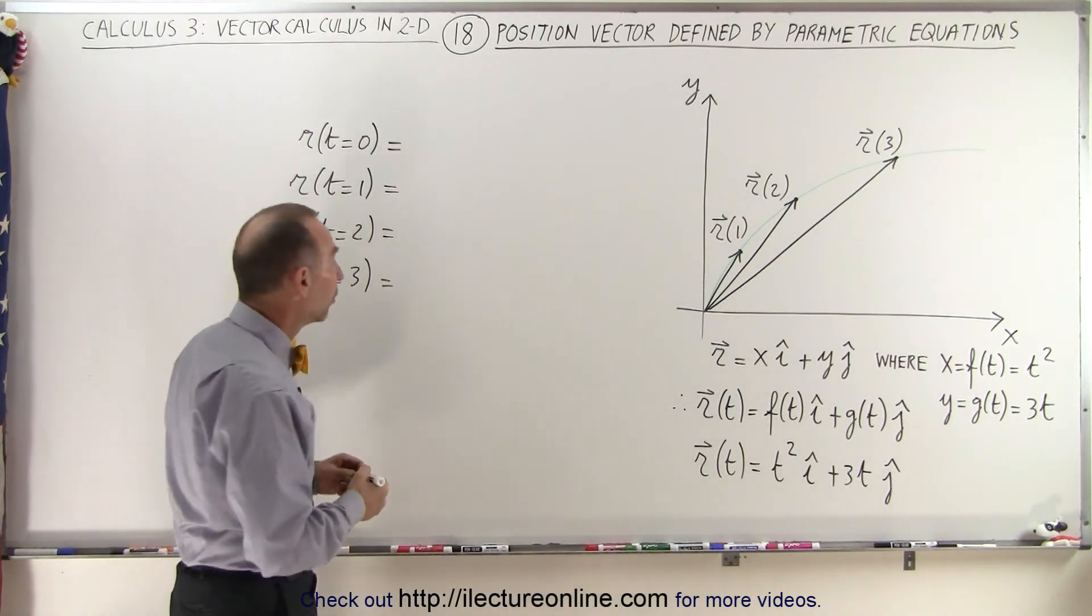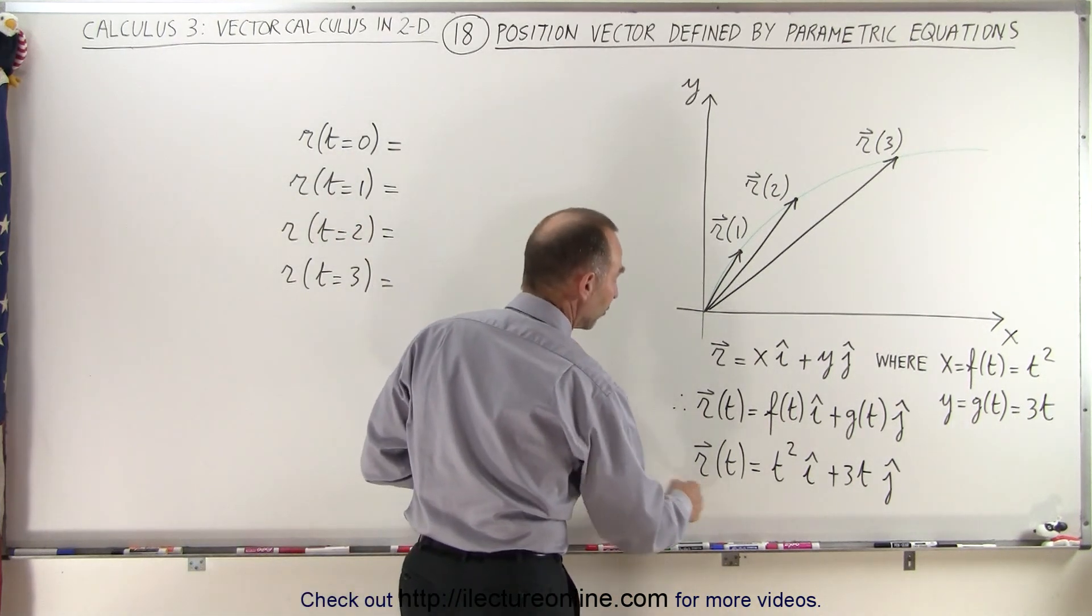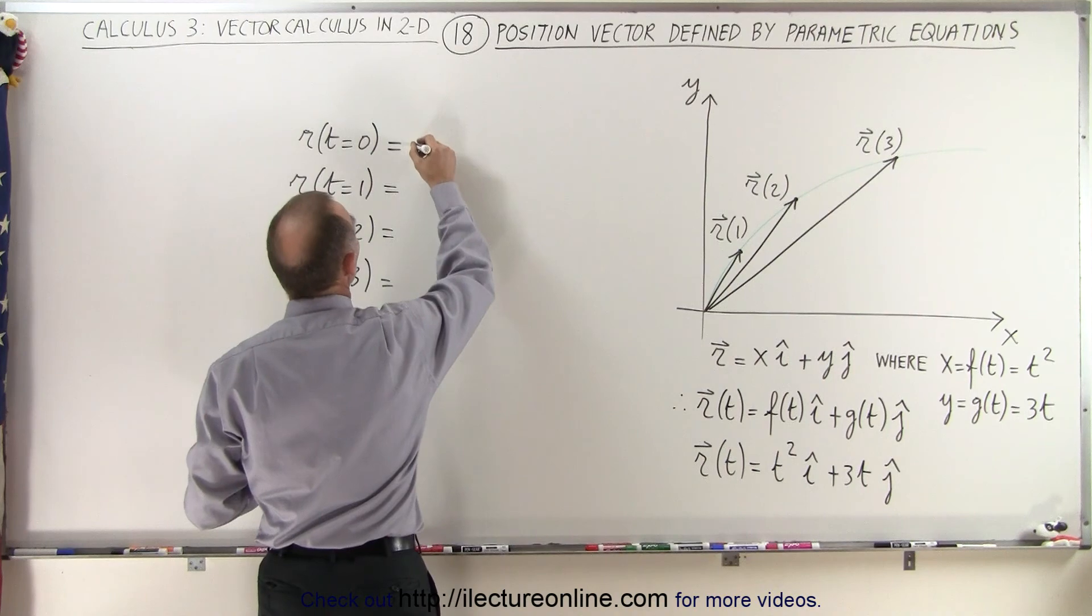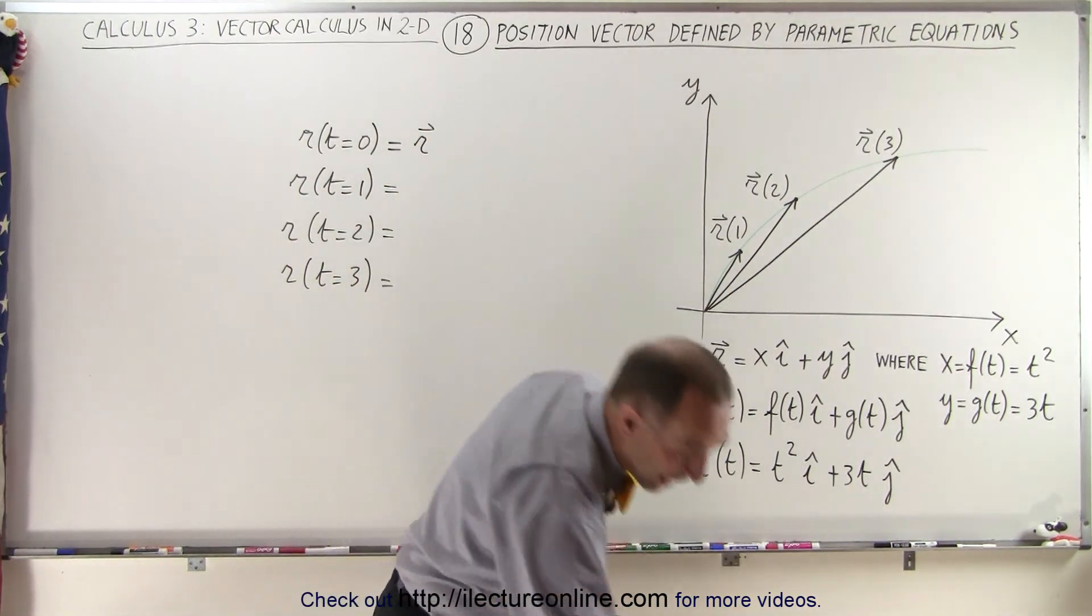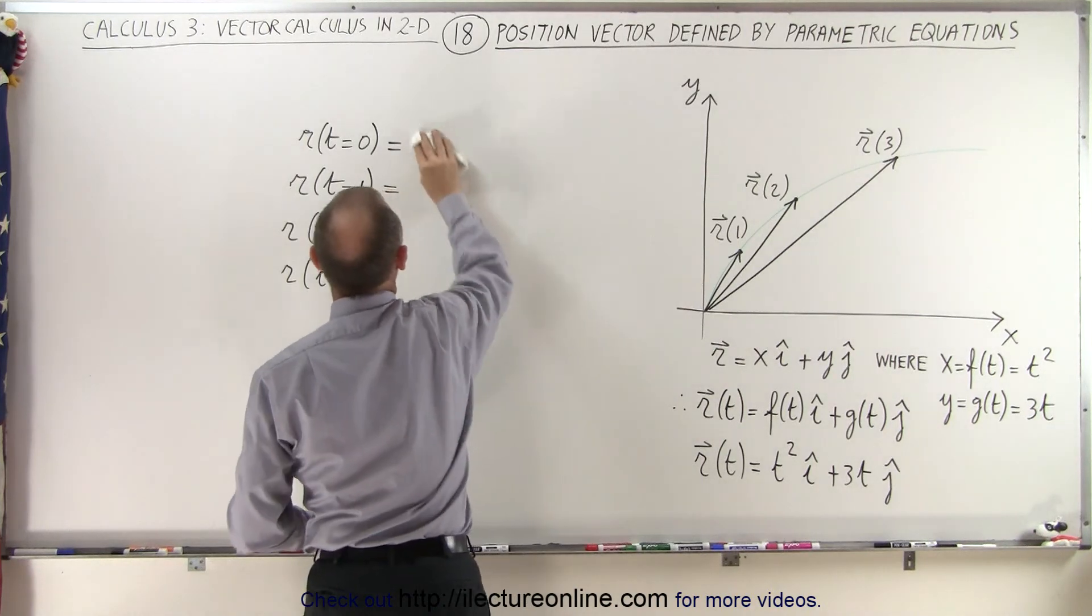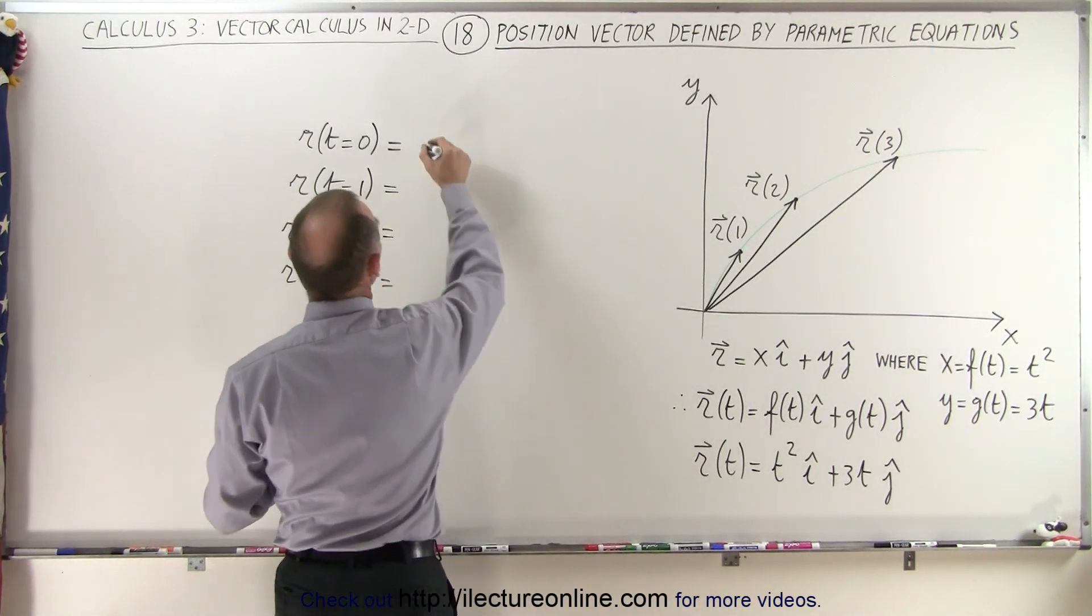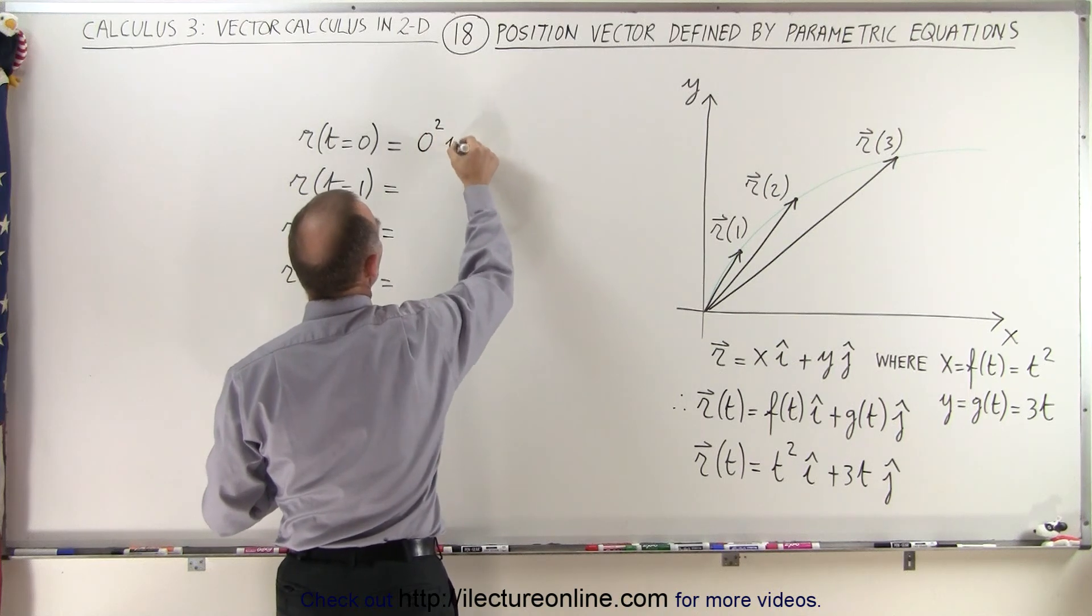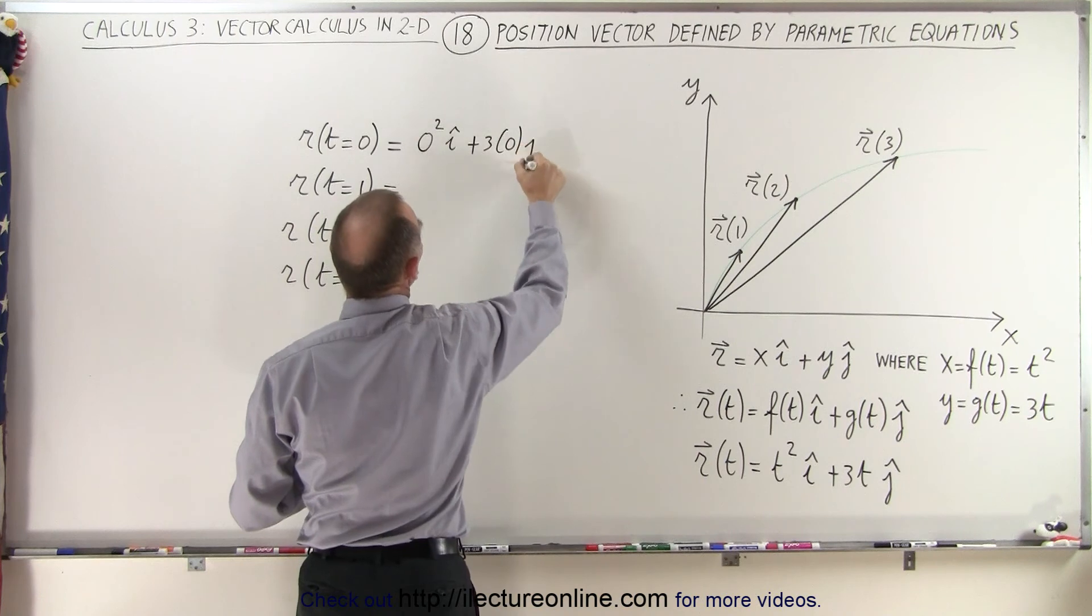Let's go ahead and do that. So first of all, when t is equal to 0, we get the position vector. So we say r of t is equal... Oh, I already wrote that, so I don't have to write it again. Okay. I'm already ahead of myself. So we write that's equal to 0 squared in the i direction plus 3 times 0 in the j direction.